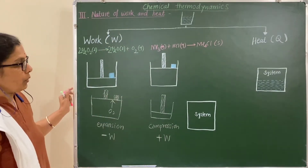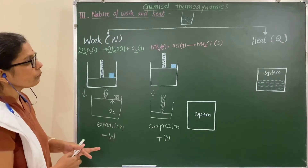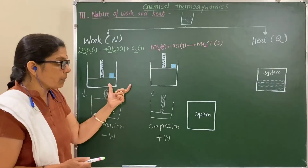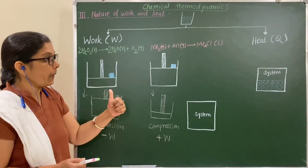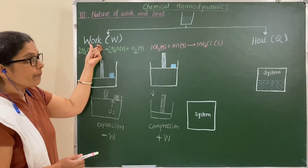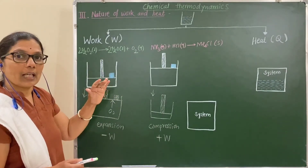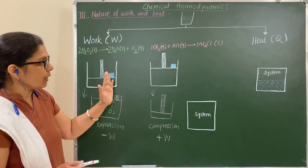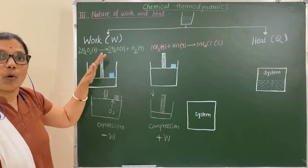So expansion converts to work done by the system, and compression converts to work done on the system. Here, in the form of expansion or compression, the system exchanges its energy in the form of work. Very importantly, remember that during this exchange in the form of work, no exchange of heat occurs — insulated walls are considered. Heat is not transferred; only energy is exchanged in the form of work.